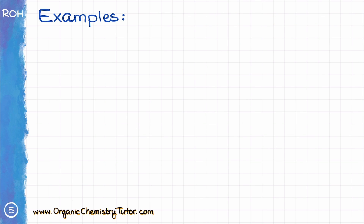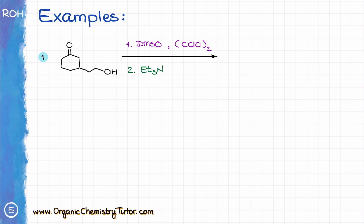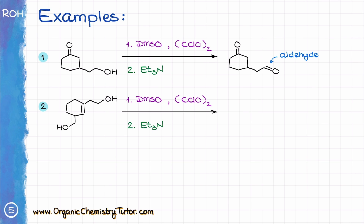The Swern oxidation, like many other oxidation reactions of this type, has excellent chemoselectivity. For instance, in this example, we are going to oxidize the primary alcohol and nothing happens to our carbonyl. In the next example, I have a molecule with two primary alcohols and an alkene — the oxidation gives me a dialdehyde and keeps my double bond intact.